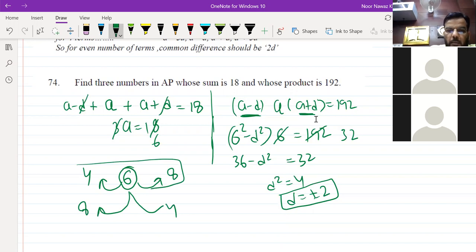I said in the last class that the numbers will be 4, 6, 8. Only the sequence will be changed. So 4, 6, 8 or 8, 6, 4. All are in AP, numbers are saved.